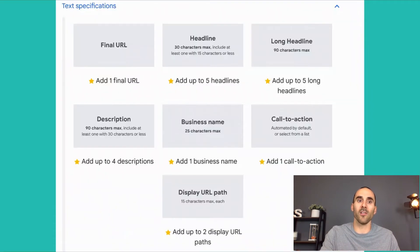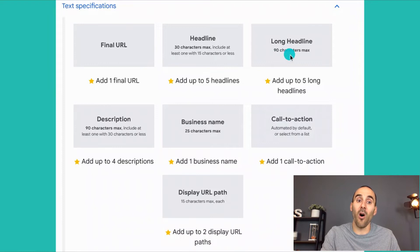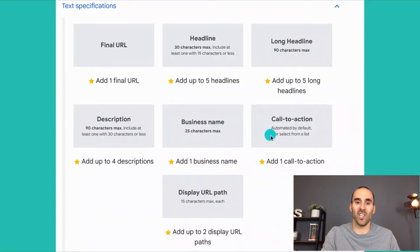Here are some of the specifications for the asset group. You have a final URL — you can add one final URL. You can have up to five headlines, up to five long headlines, four descriptions, one business name, one call to action, and two display URLs.